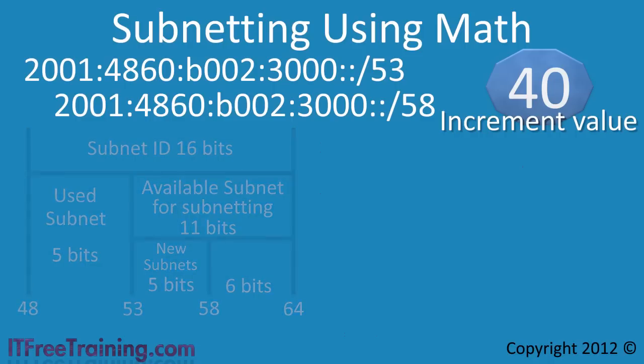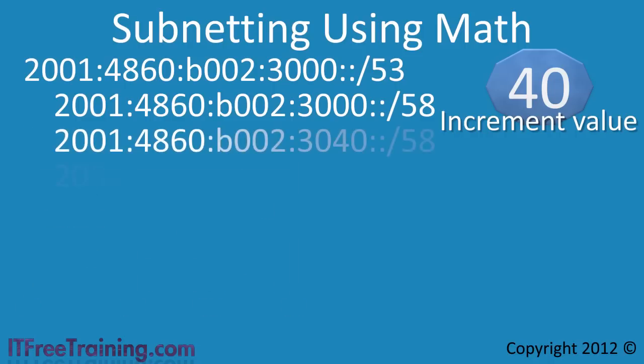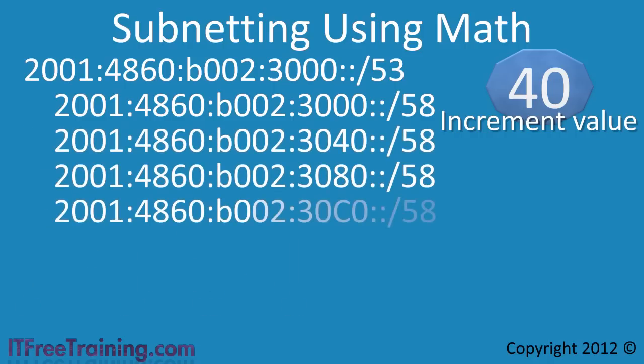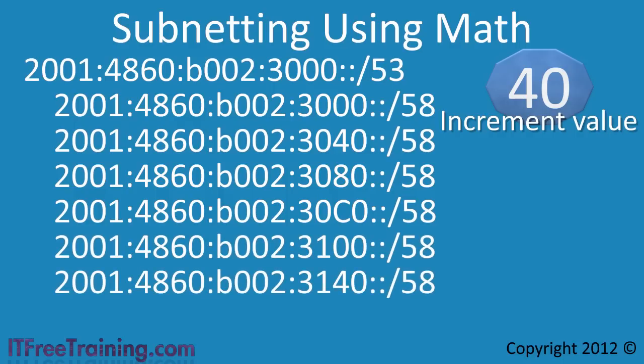Now that I have the increment value, it is a simple matter to add that to each address to work out the ranges for the subnets. As you can see, the sequence of networks goes 3000, 3040, 3080 and seeing it is hexadecimal the next one will be 30C0.